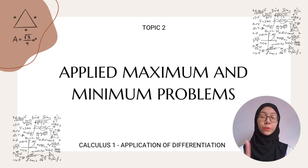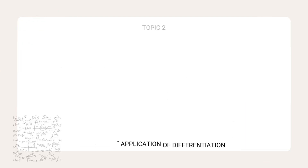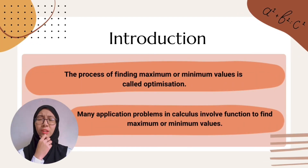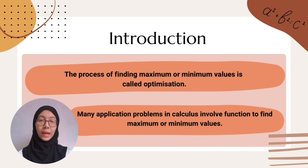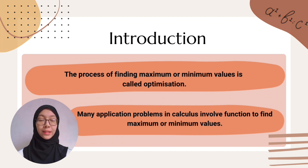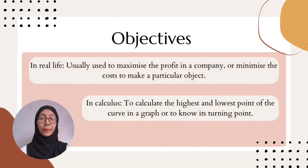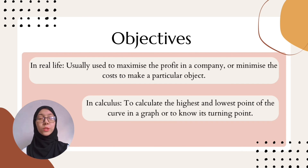For topic 2, me and Muhammad Daniel bin Muhammad Zahid will be guiding you through applied maximum and minimum problems. Applied maximum and minimum problems is the process of finding maximum or minimum values, which is called optimization. There are many application problems in calculus involving functions to find maximum or minimum values. In real life, it is used to maximize the profit of a company or to minimize the cost of creating a particular object.